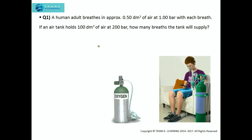For the first question, we need to recall the steps and read the question properly. A human adult breathes in approximately 0.50 decimeter cube of air at one bar with each breath. This human adult is using an air tank to inhale the air, and the air is entering at a pressure of one bar.